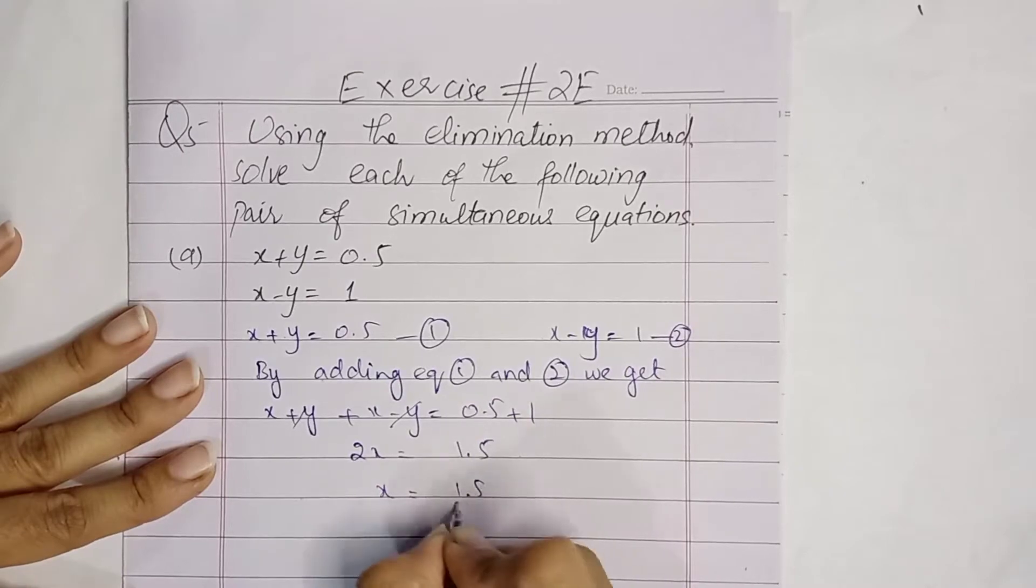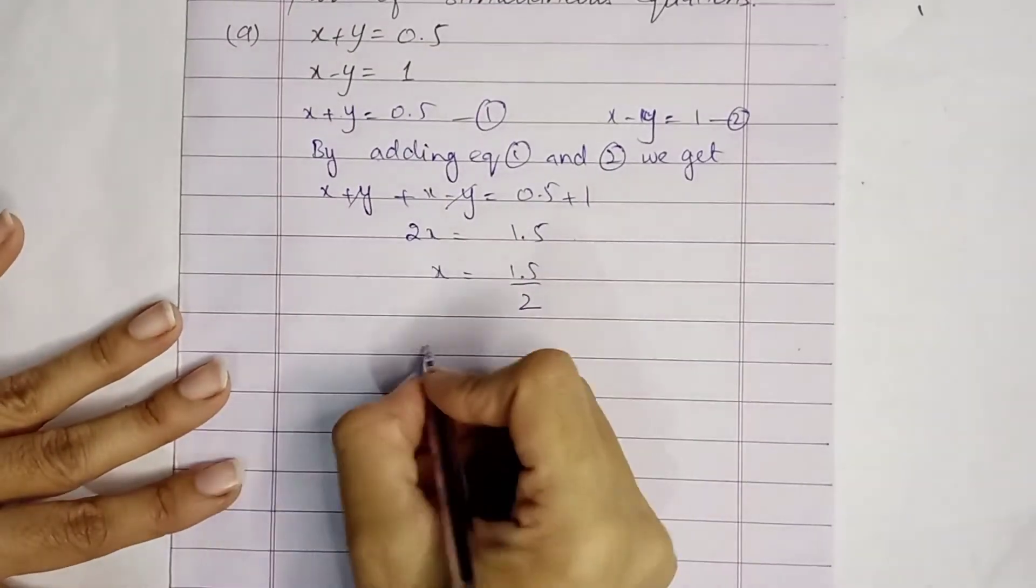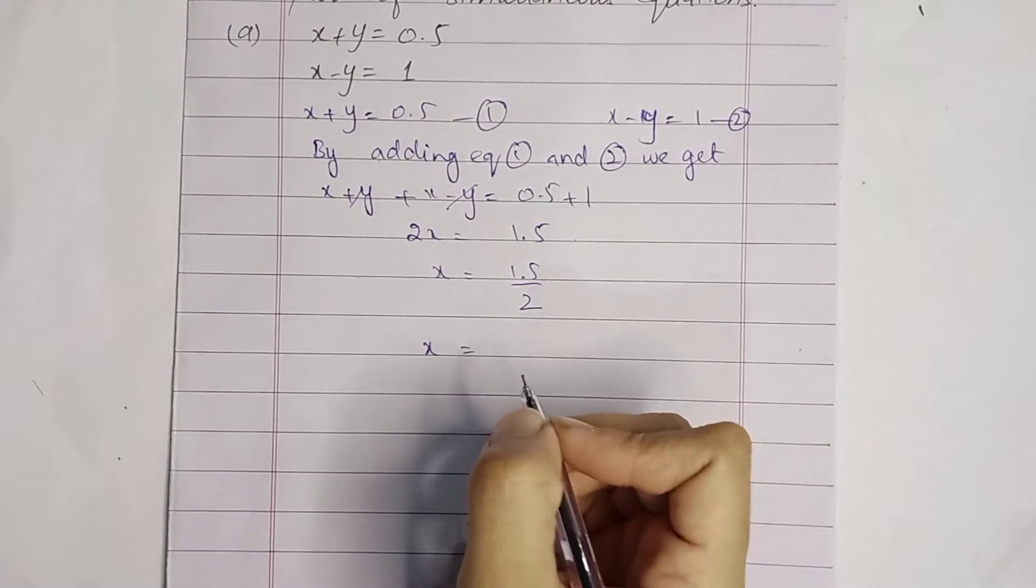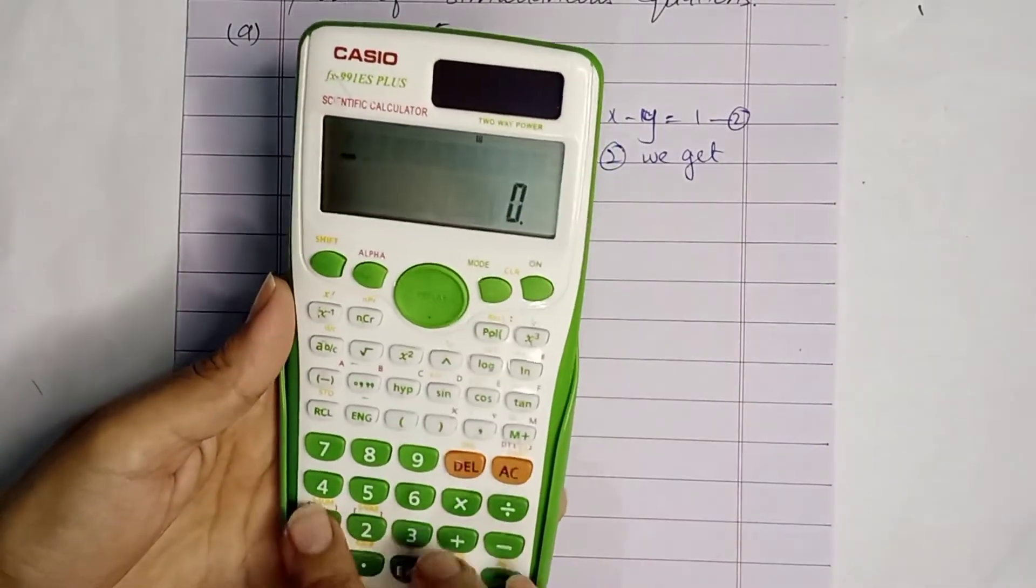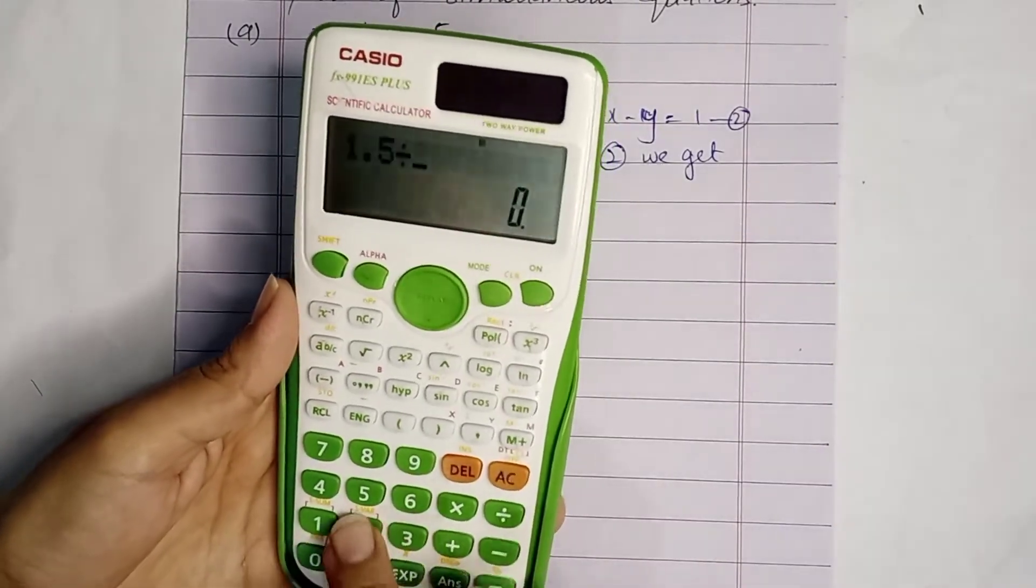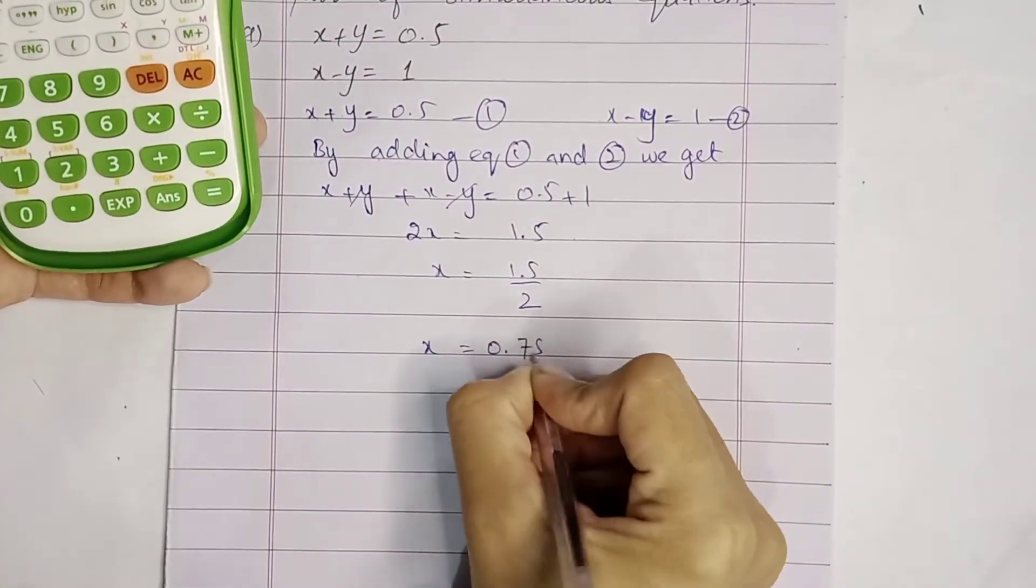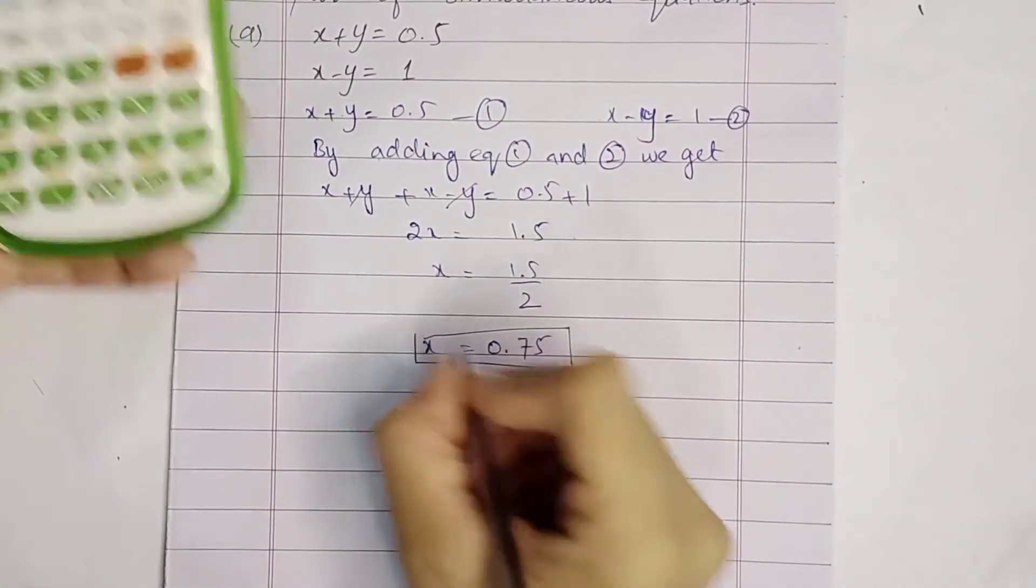x is equal to 1.5 over 2. You can solve it in the calculator. 1.5 divided by 2, we get 0.75. This is our x.